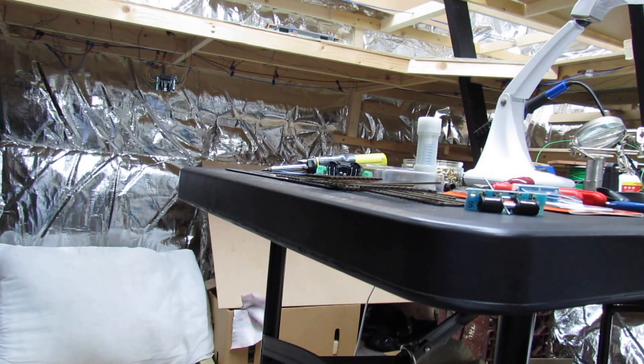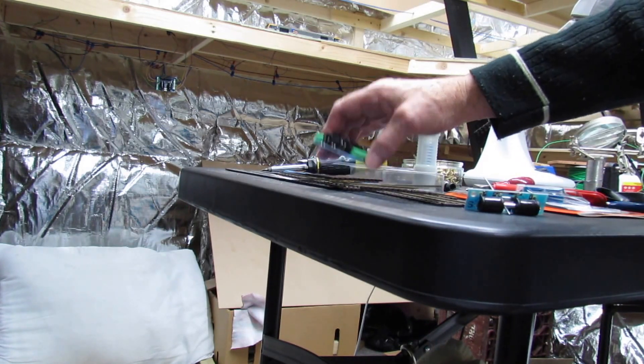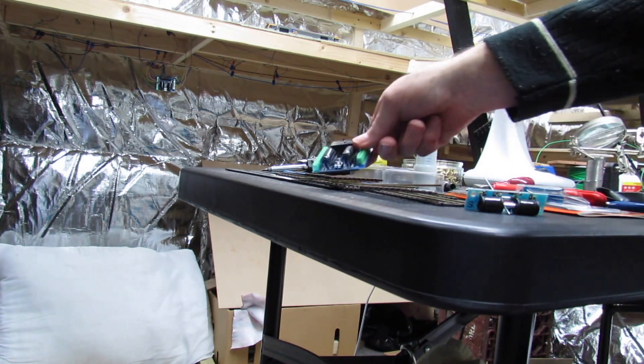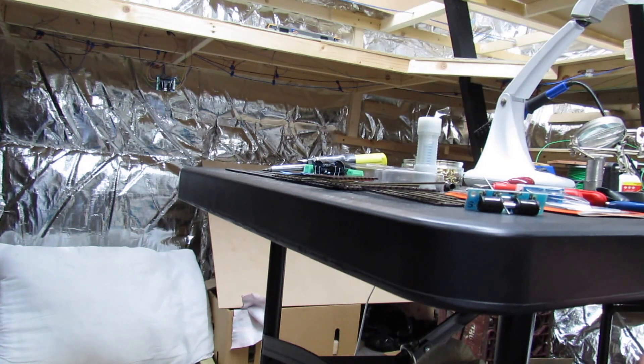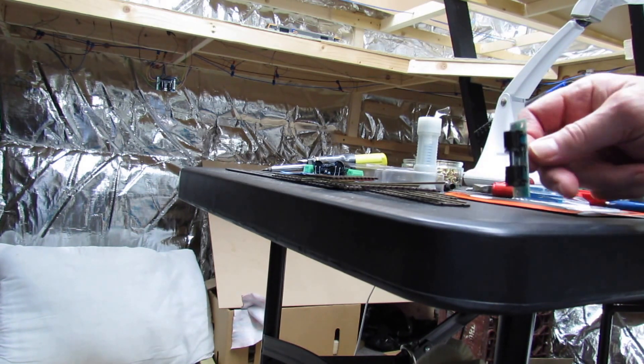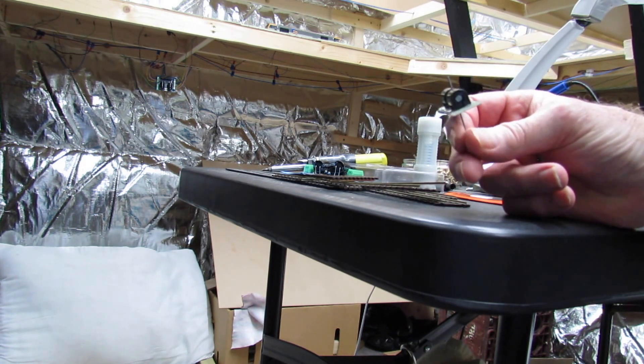On my layout, the fiddle yard all has insulated points so I just use a PM2 with a non-switched point motor and the older version of the controller which doesn't have the switch. Most of my points have the older version without the switch because I just use the polarity switch to change all the other points on my layout which are all electrofrog points.